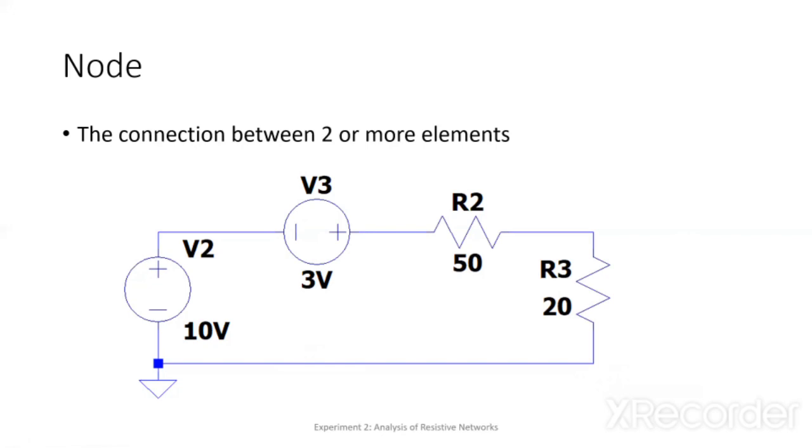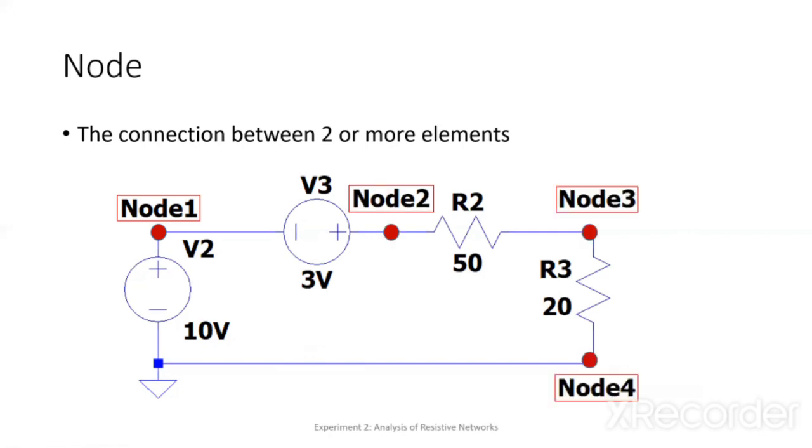Let's count the number of nodes. Node 1, node 2, node 3, node 4. Four nodes. So, here we have four nodes.